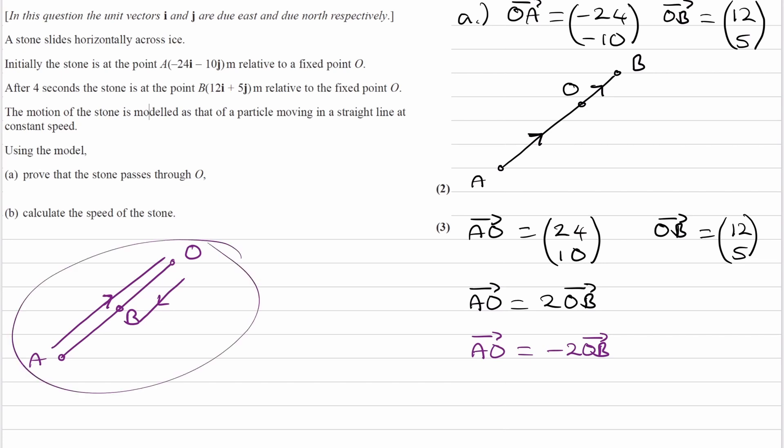From this diagram, I've drawn B halfway in between A and O. We can see that AO is in the opposite direction of OB and has twice the length.